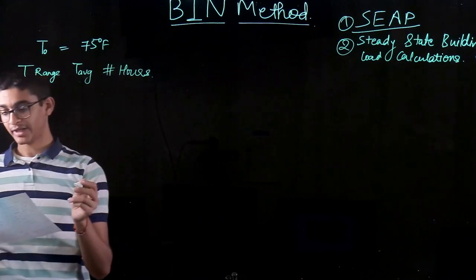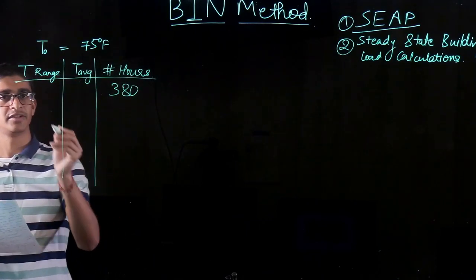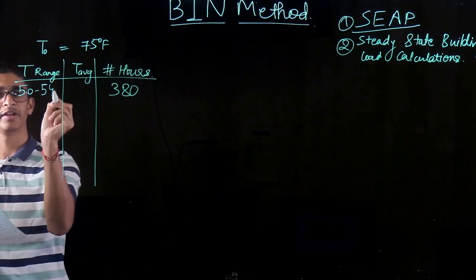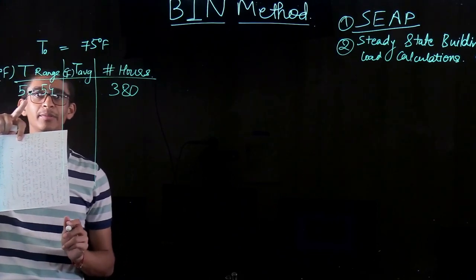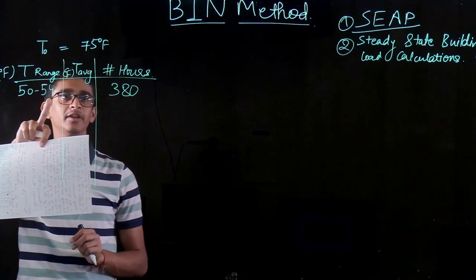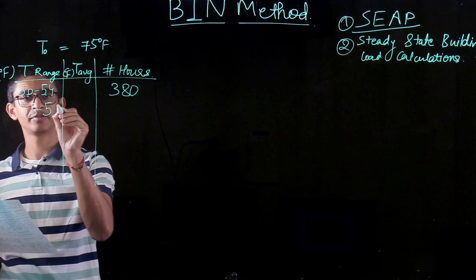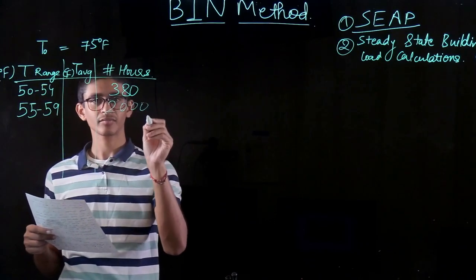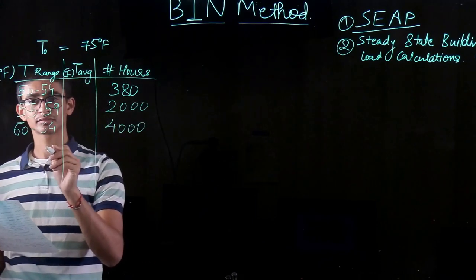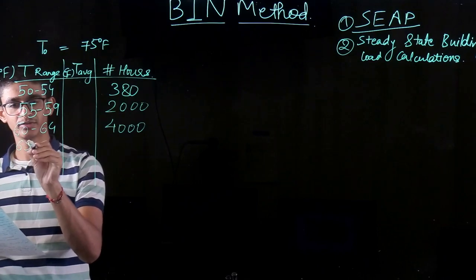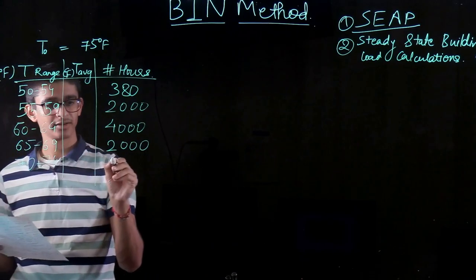Let's say we have some hours in the year associated with temperature ranges and their average temperatures. For example: there are 380 hours with a temperature range of 50–54°F; for outside temperatures between 55–59°F there are around 2,000 hours; from 60–64°F there are 4,000 hours; from 65–69°F there are 2,000 hours again; and from 70–74°F there are 380 hours.